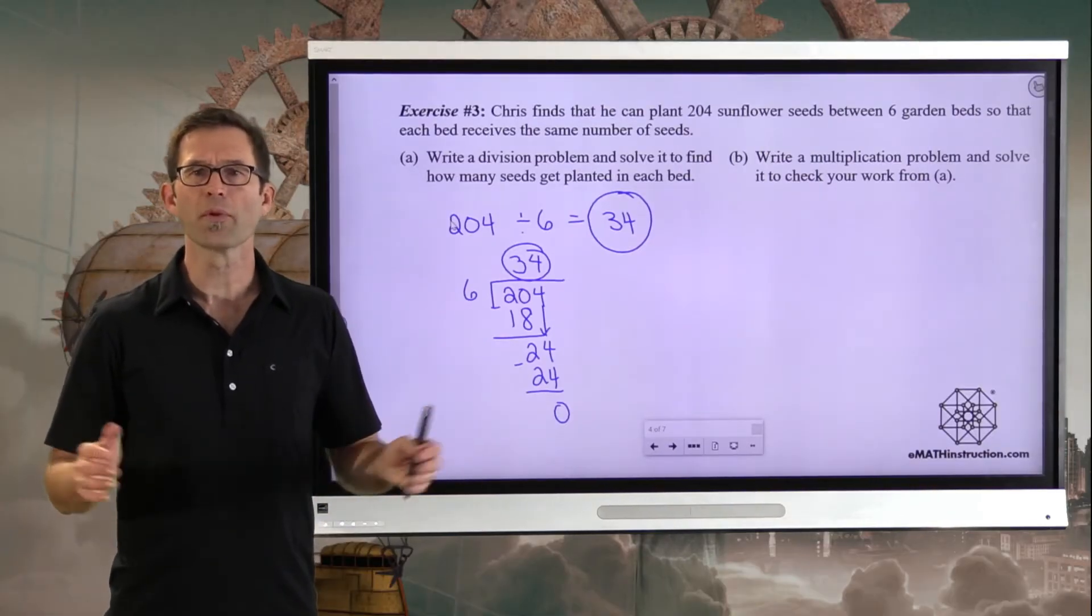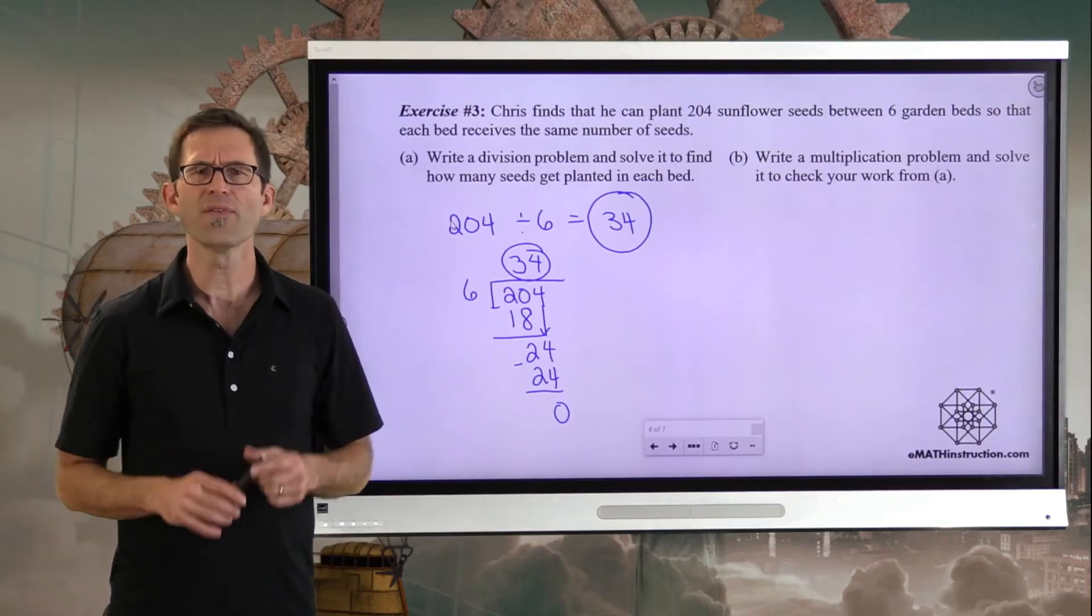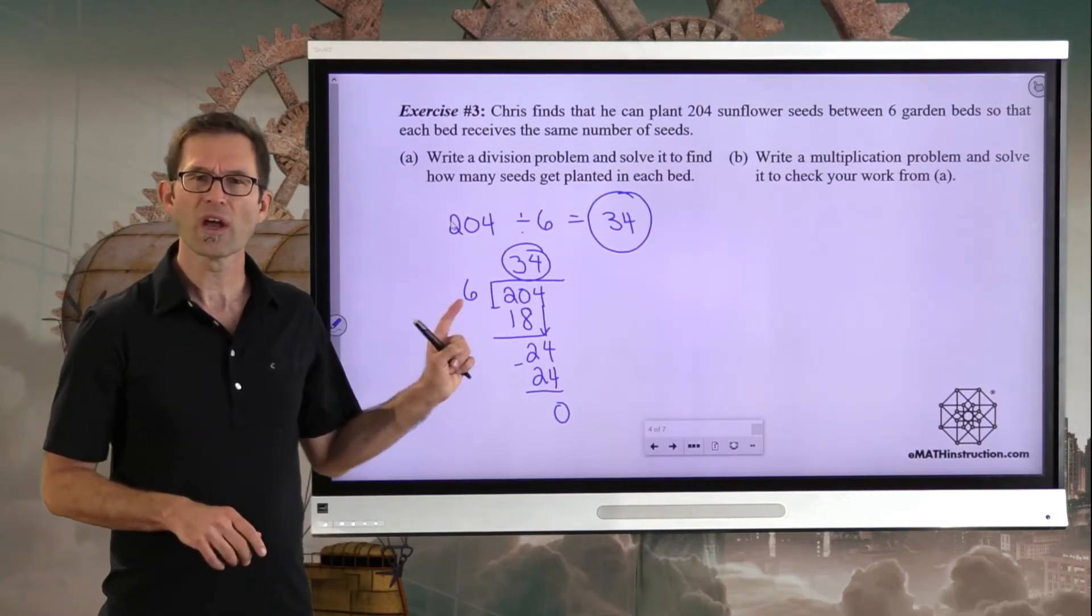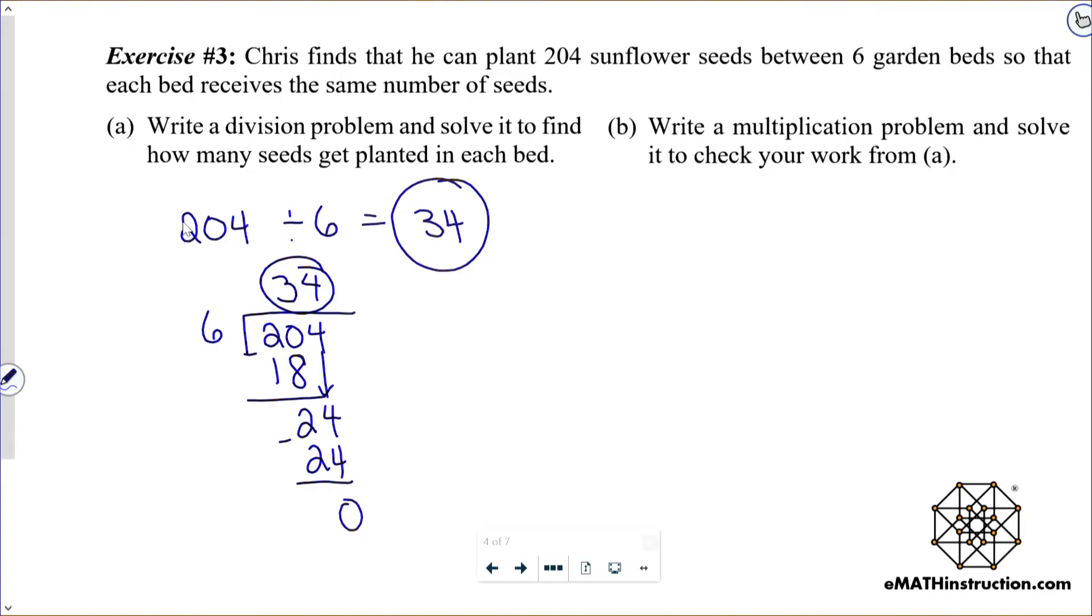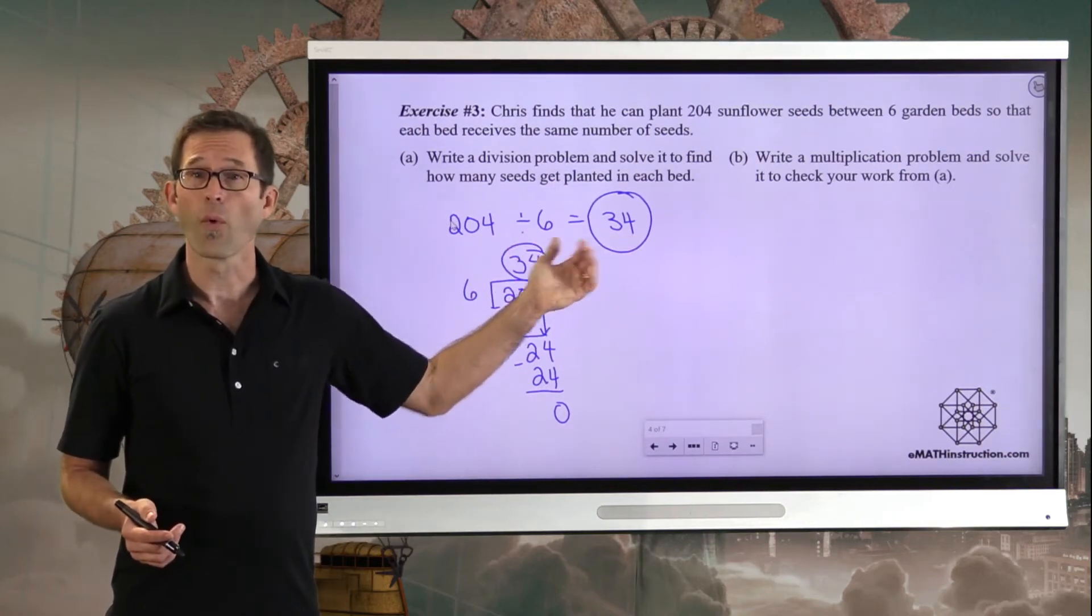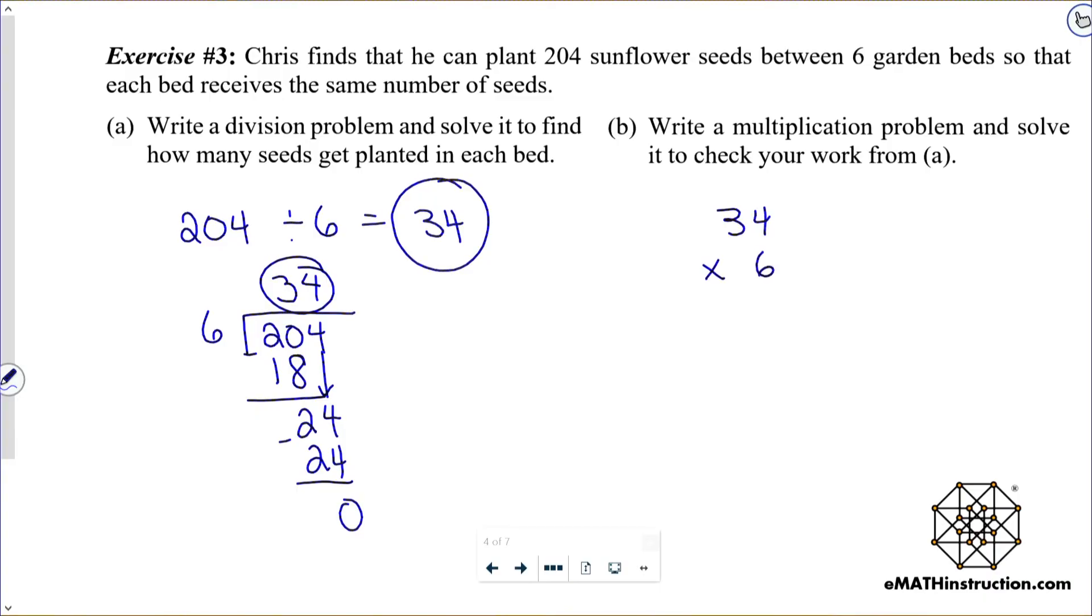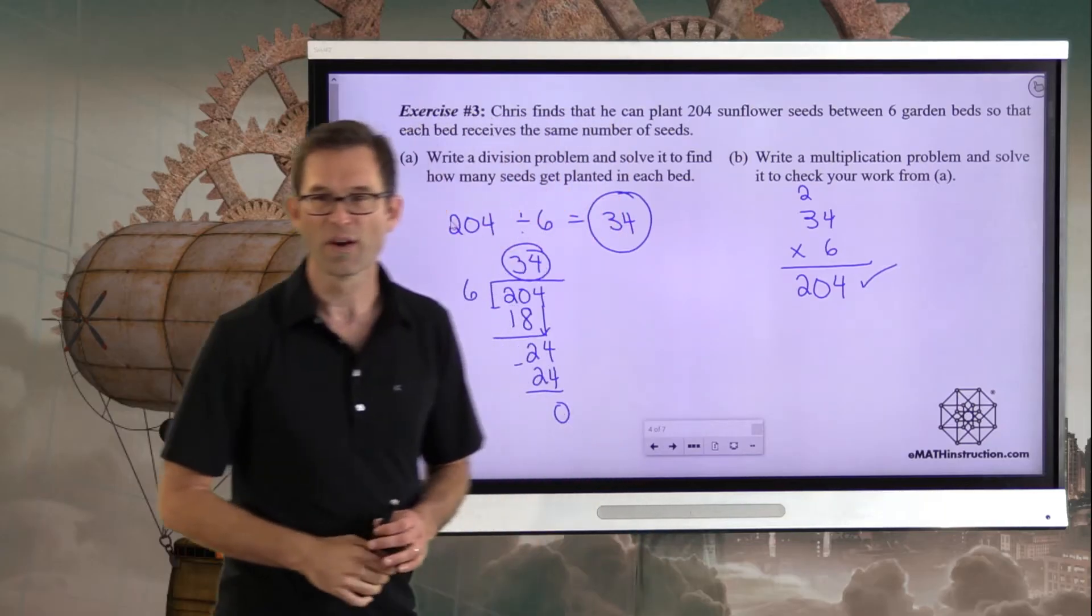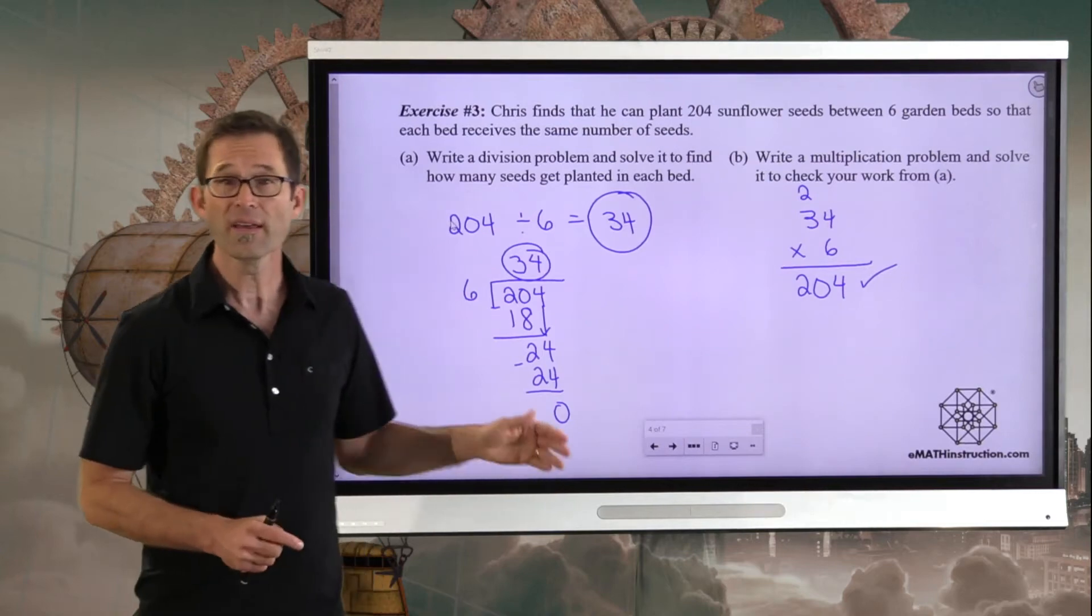Letter B says write a multiplication problem and solve it to check your work from A. Pause the video now and see if you can do a multiplication problem that checks to make sure that 34 is the correct answer. Well, it's this simple. If 34 is the correct answer, then six times 34 should give us 204. And let's take a look. 34 times six. Well, six times four is 24, carry the two. Six times three is 18, add two more, and I get 204. So if I plant 34 seeds in each one of my six beds, I'll use up my 204 seeds, and that gets into how we do division.